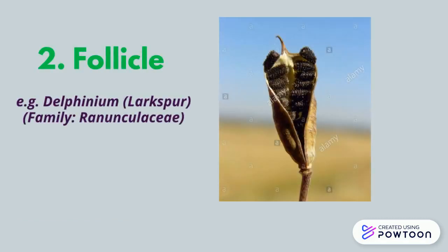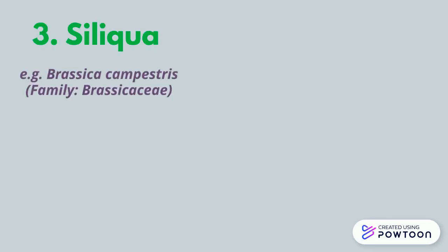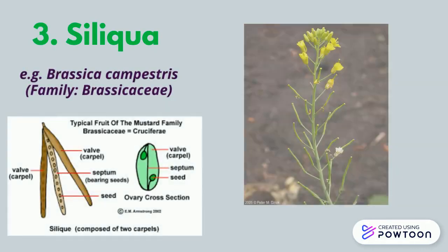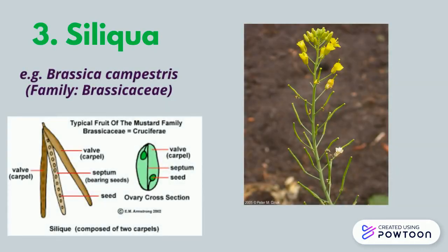Follicle is like a pod — unilocular and superior — but splits up only by one ventral suture. A siliqua is an elongated, narrow, cylindrical, many-seeded simple dry fruit developed from a bicarpellary syncarpous superior pistil having parietal placentation. It opens explosively along the sutures to expose the seeds attached to the replum.